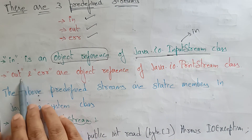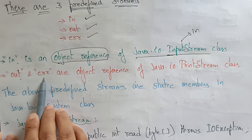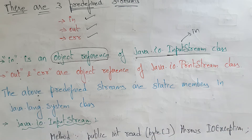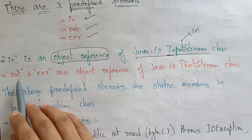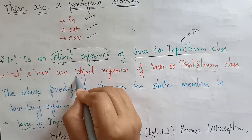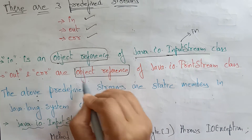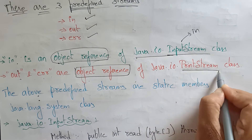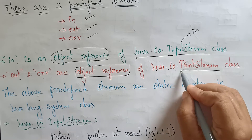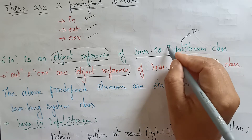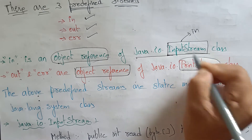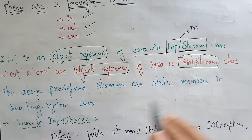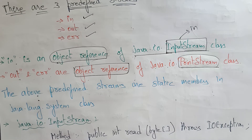What about 'out' and 'error'? 'Out' is for output, and 'error' is used whenever a program has a runtime error — after compiling, the error stream will be called. Out and error are also object references, present in the java.io.PrintStream class — not OutputStream, it is PrintStream class. See the difference: 'in' is present in InputStream class, and 'out' and 'error' are present in PrintStream class.